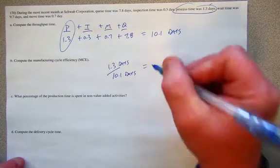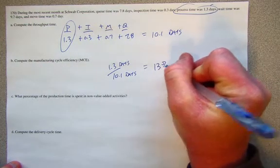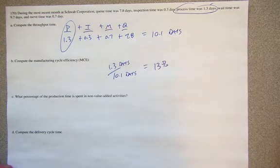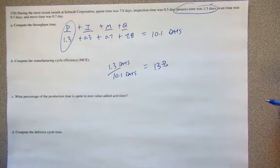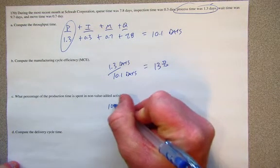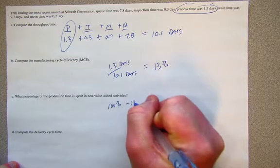So, we can look at this and we can say the manufacturing cycle efficiency is really 13%, which is pretty putrid, really. So, what percentage of the production time is spent on non-value added activities? Well, that would be 87%.